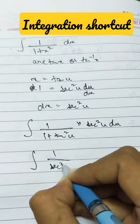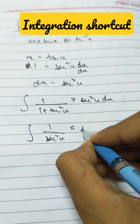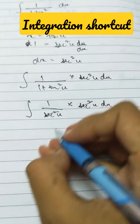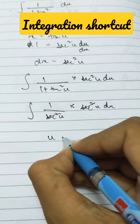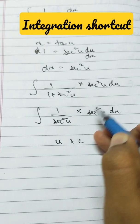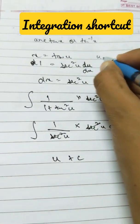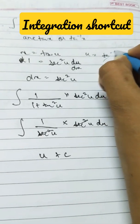Now one plus tan squared is nothing but secant squared u into secant squared u du, and we can just cancel these terms out. So the integral becomes simply du, which is u plus c.